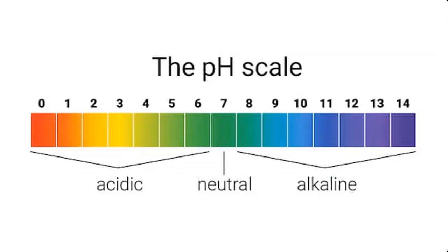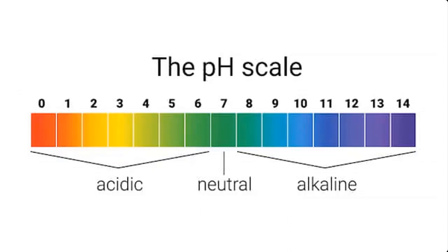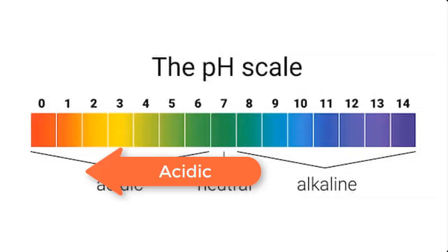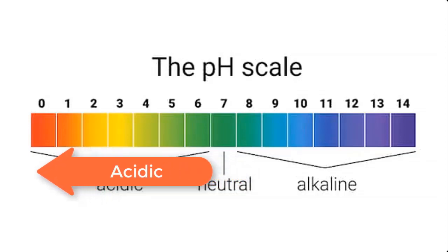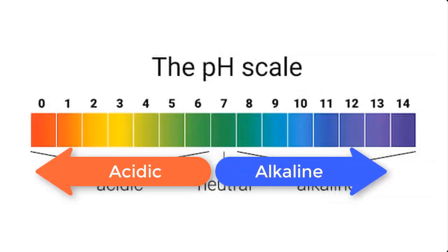An example of a neutral solution is water. pH is expressed on a number scale ranging from 0 to 14. 0 to 6 is the acidic part of the scale and 8 to 14 is the alkaline part of the scale, while 7 stands for neutral. Acidity increases from 6 to 0, meaning 0 is more acidic than 1, and 1 is more acidic than 2 — so 6 is the least acidic on the scale. On the other hand, 8 is less alkaline than 9, and 9 is less alkaline than 10.